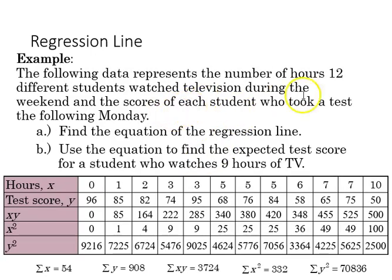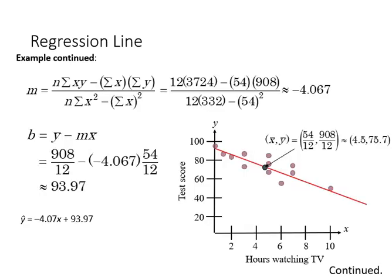Returning to our example with students who watched television and then took a test with various results, we're looking at the relationship between hours of television watching and test scores. We need to find x, y, xy, x², and y², take the sum of those values, and from that create our equation.